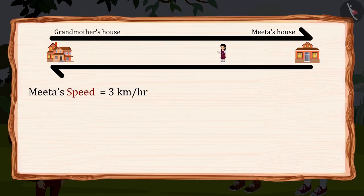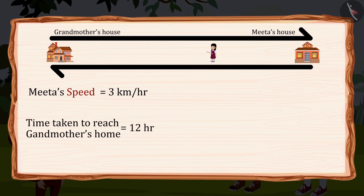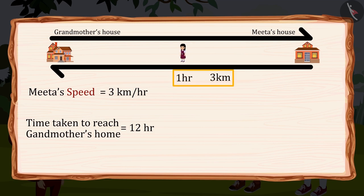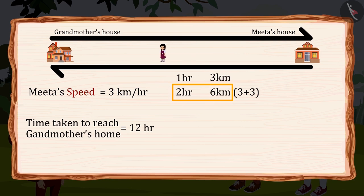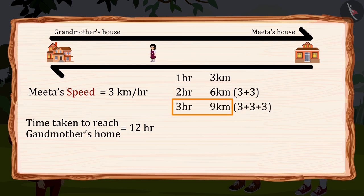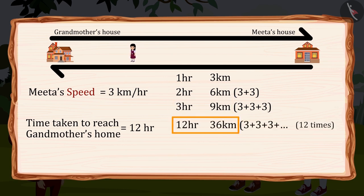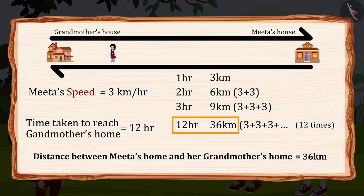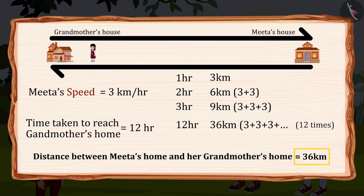Here Meeta's speed is 3km per hour and she took 12 hours to reach her grandmother's home. That means Meeta walks 3km in 1 hour, 6km in 2 hours, 9km in 3 hours. Similarly, she will walk 36km in 12 hours. So Meeta's house is 36km away from her grandmother's house. Wasn't it easy?